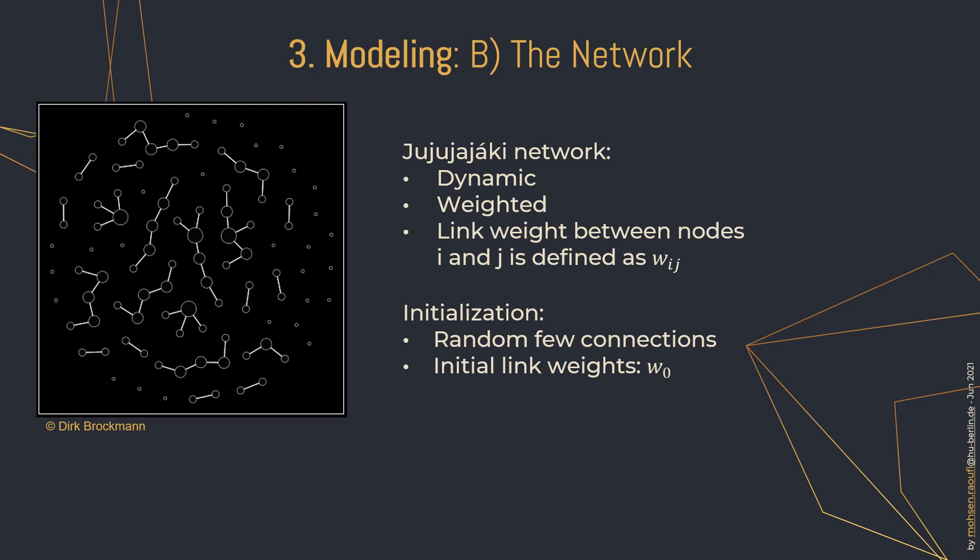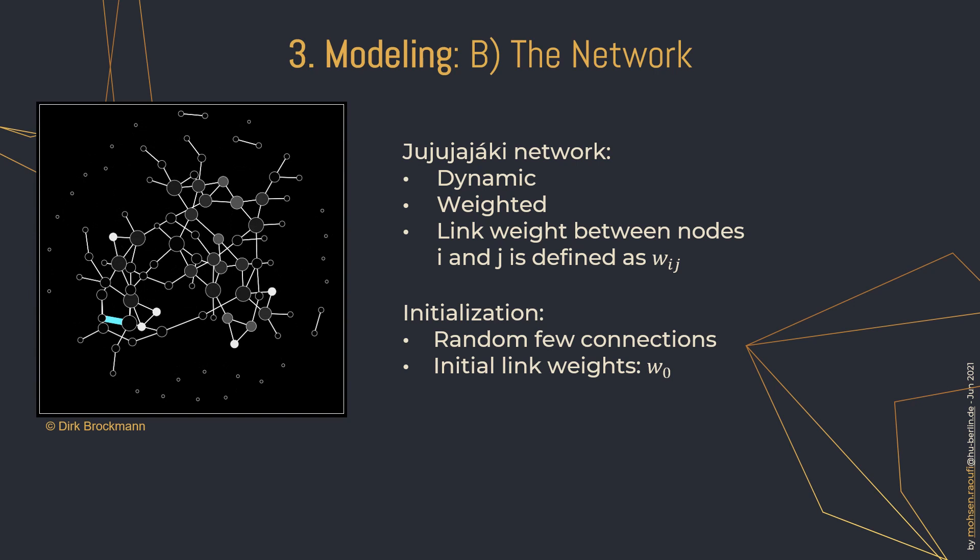A Juju Network is dynamic, meaning that the properties of its elements change over time. It is weighted, which means that links show not only the existence of a connection but also the strength of it. At the beginning, a random network with rather few connections is initialized. By the passage of time, nodes get new connections, edges get more weighted, and communities are being shaped. In the visualization, the degree of nodes is shown by their radius. The weight of an edge is proportional to its width and is also color-coded. The color of a node represents the local clustering coefficient — in the inverted color scheme, the lighter the color, the higher the CC.